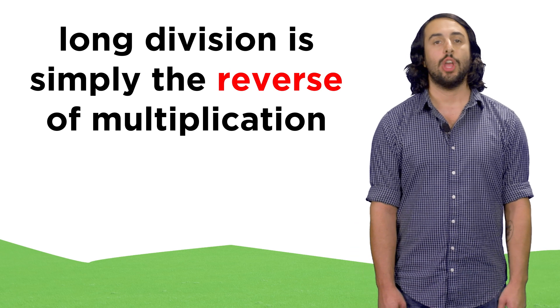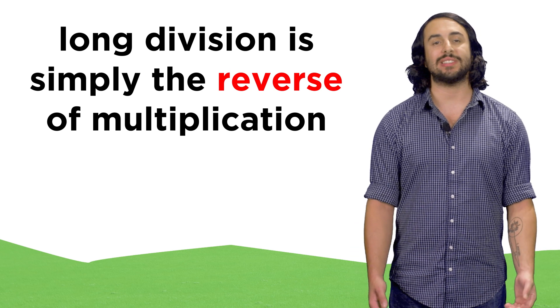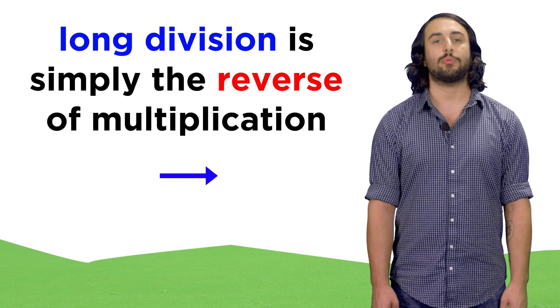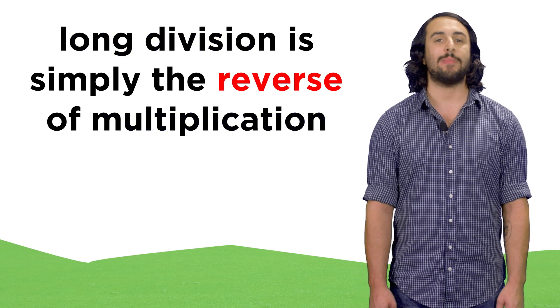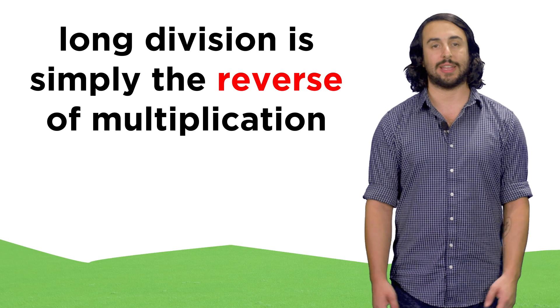So that's all there is to long division. We go one digit at a time, just like we did with multiplication, except we go left to right instead of right to left, since division is meant to be the reverse of multiplication.